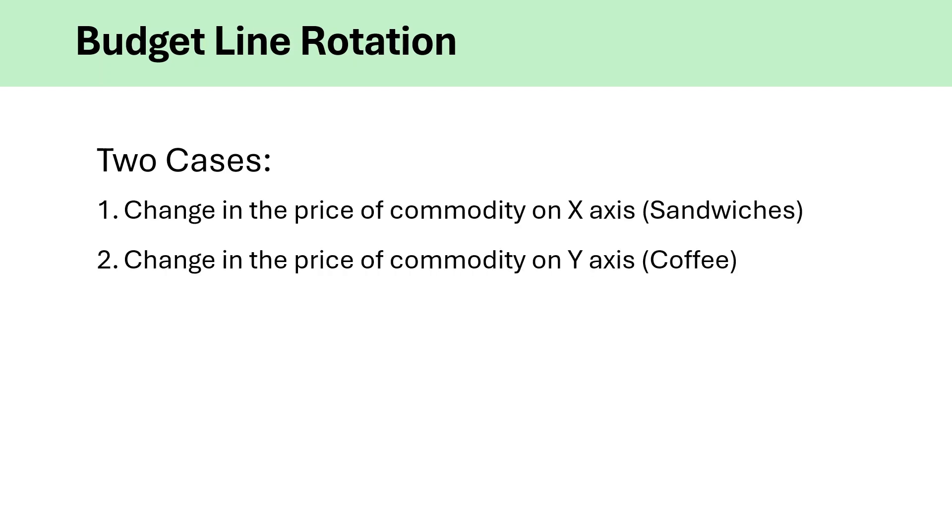Now, let's discuss what causes rotation of the budget line. This happens when there's a change in the price of one or both commodities while the consumer's income remains unchanged. Let's break these down one by one to understand how they impact the consumer's budget line.